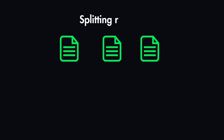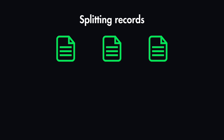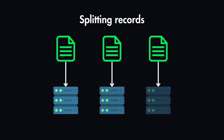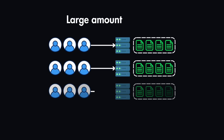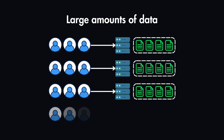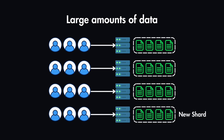Database sharding is the process of splitting up records that would normally be held in the same table or collection and distributing them across multiple machines, which are also known as shards. Sharding is especially useful in cases where you're working with large amounts of data, as it allows you to scale your database horizontally by adding more machines to serve more users.